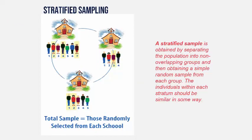One of the next methods is called stratified sampling. A stratified sample is where you take your population and separate them into non-overlapping groups, then obtain a simple random sample from each group. These non-overlapping groups are called strata. Each individual within a stratum should be similar in some way — they should share some common characteristic.